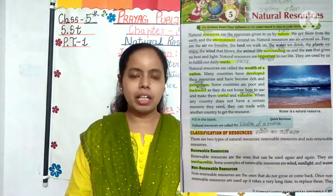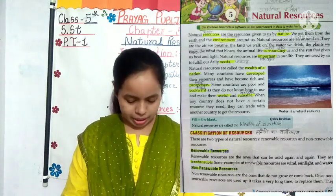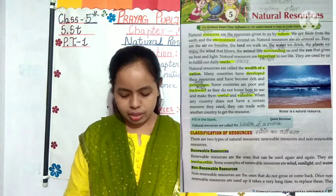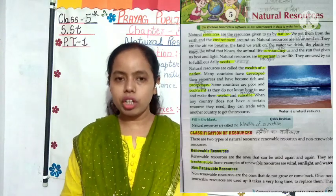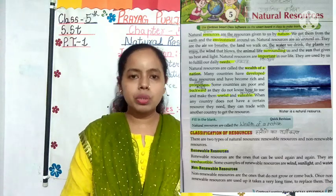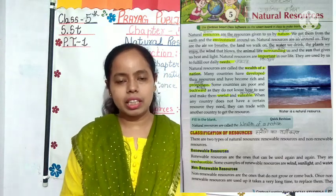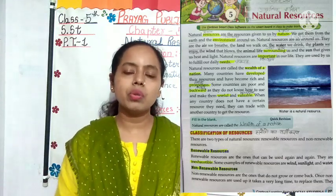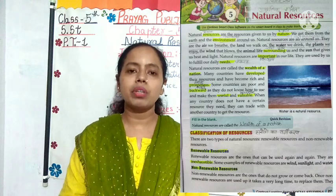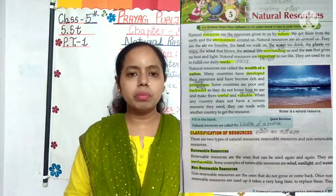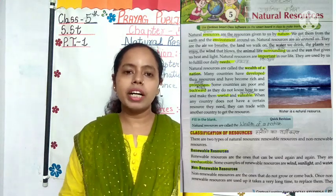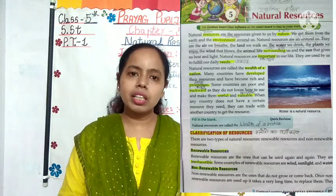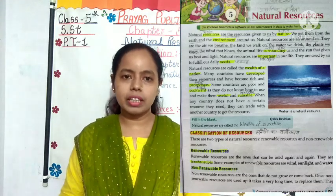They are inexhaustible — they cannot be finished. Some examples of renewable resources are wind, sunlight, and water. Students, no matter how much sunlight we use, it does not run out — it keeps replenishing quickly. Similarly, with water — students, we should not waste water — but however much water we use, it keeps forming again. Similarly wind — no matter how much we use wind, it does not run out. So natural resources that can be used again and again and keep forming quickly are called renewable natural resources.